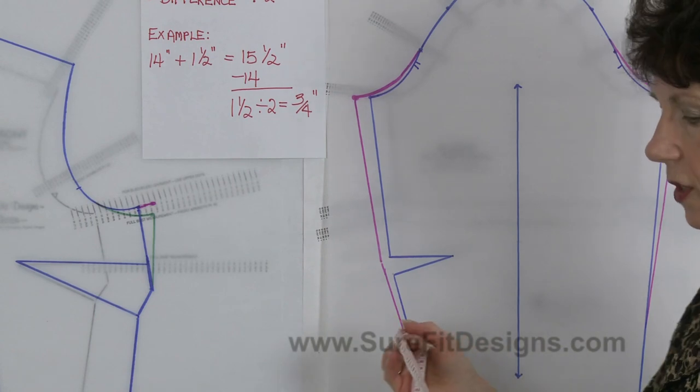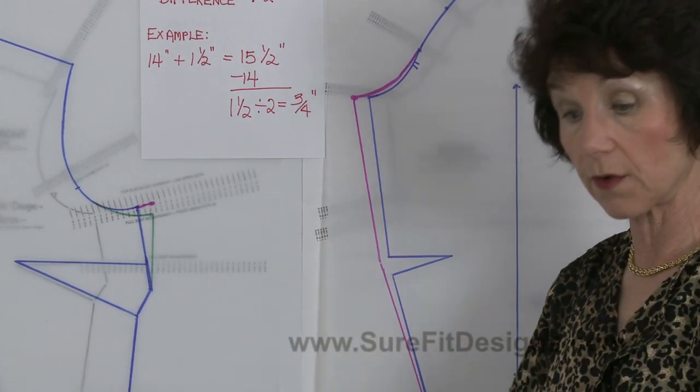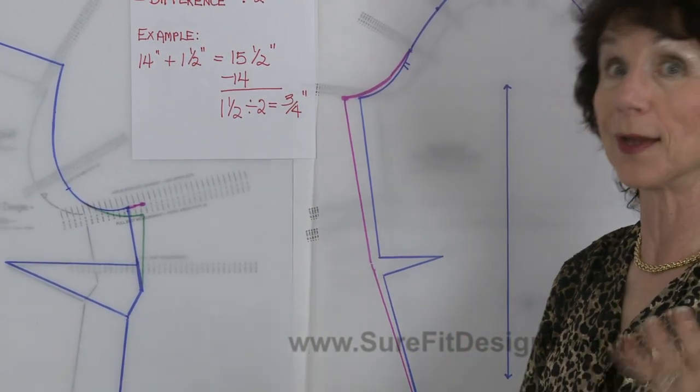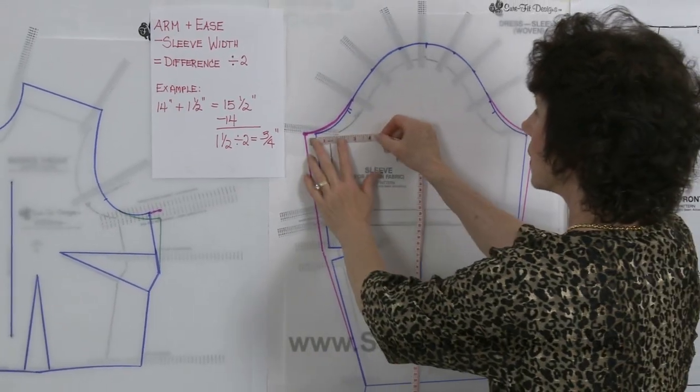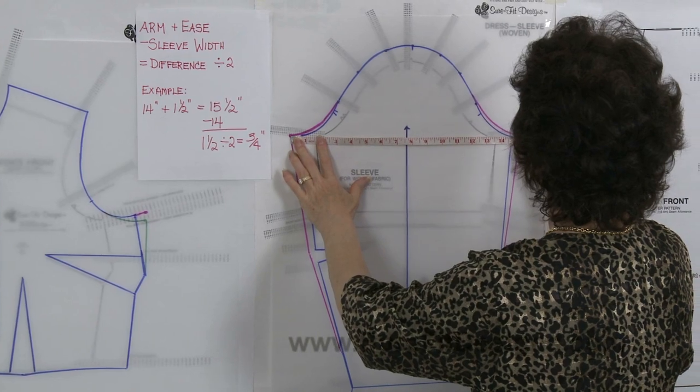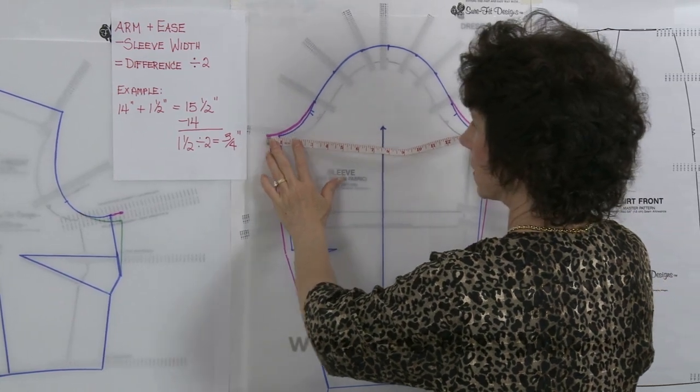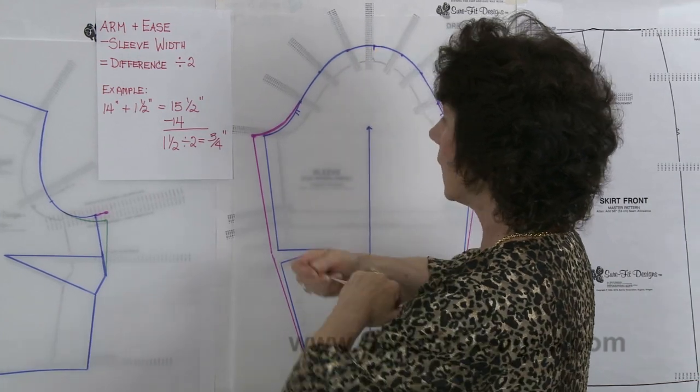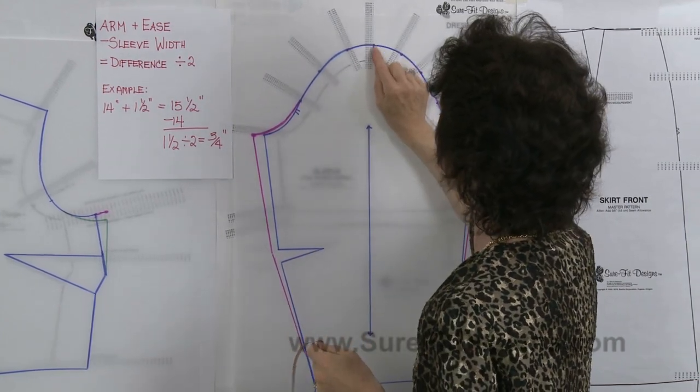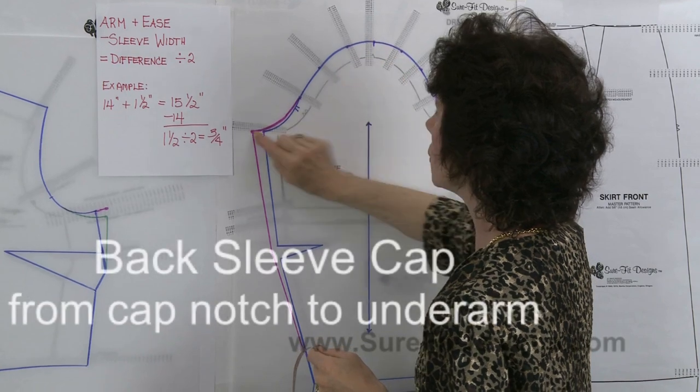So when you are done doing this alteration, or what I say I call the minor tune-ups, then you want to verify and make sure that you're getting approximately what you need. So in theory this should now measure about fifteen and a half inches across, and it does.